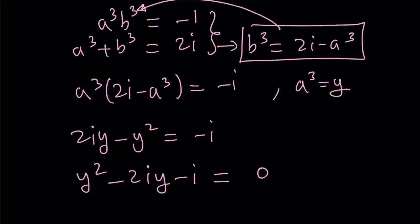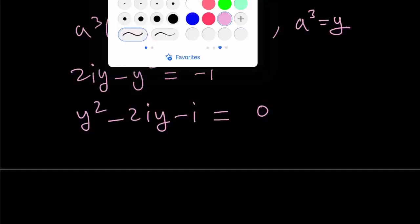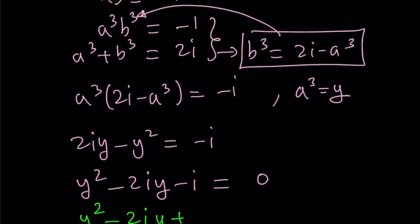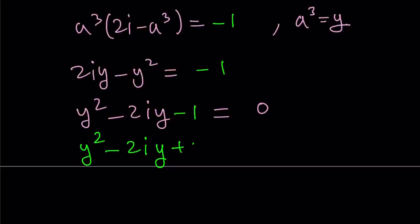If you distribute, let's set a³ equal to y, and you get 2iy - y² equals -1. Let's put everything on the positive side of y squared: y² - 2iy - 1 = 0. Now at this point, you could definitely use the quadratic formula, but I want to use something smarter or nicer. I want to use something cool, and that is writing -1 as i squared.